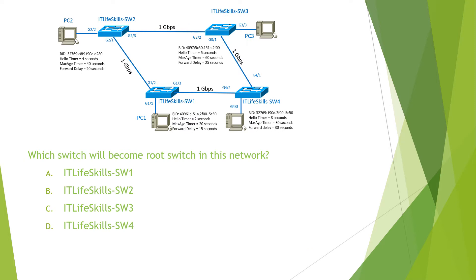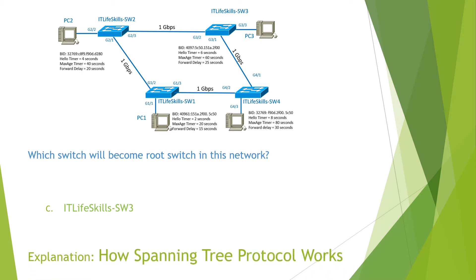The question reads: which switch will become the root switch in this network? From this network, we see that Switch 3 has the lowest bridge priority of 4097, so it will become the root switch. Therefore, the answer for this question is C. You can find the detailed explanation in the video: how spanning tree protocol works.